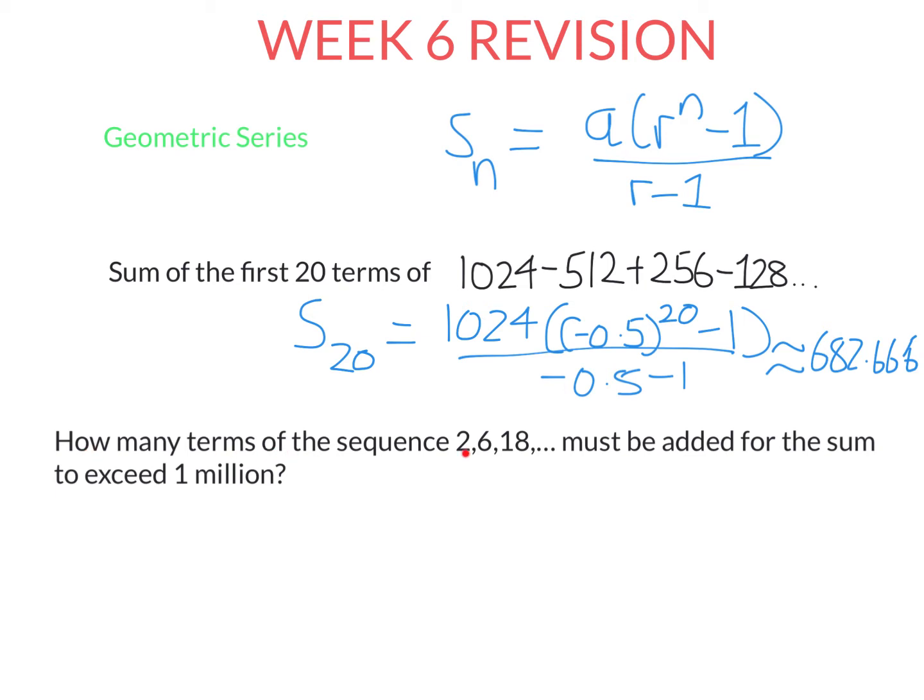Let's do this question. How many terms of this sequence must be added for the sum to exceed 1,000,000? Because we're talking about a sum, we're going to use this formula here. Because we're asking how many terms, we're actually going to be solving for N. In this case, the sum is going to be A. Now R is 3, so 3 to the power of N minus 1 over 3 minus 1. What I want is that to exceed 1,000,000.